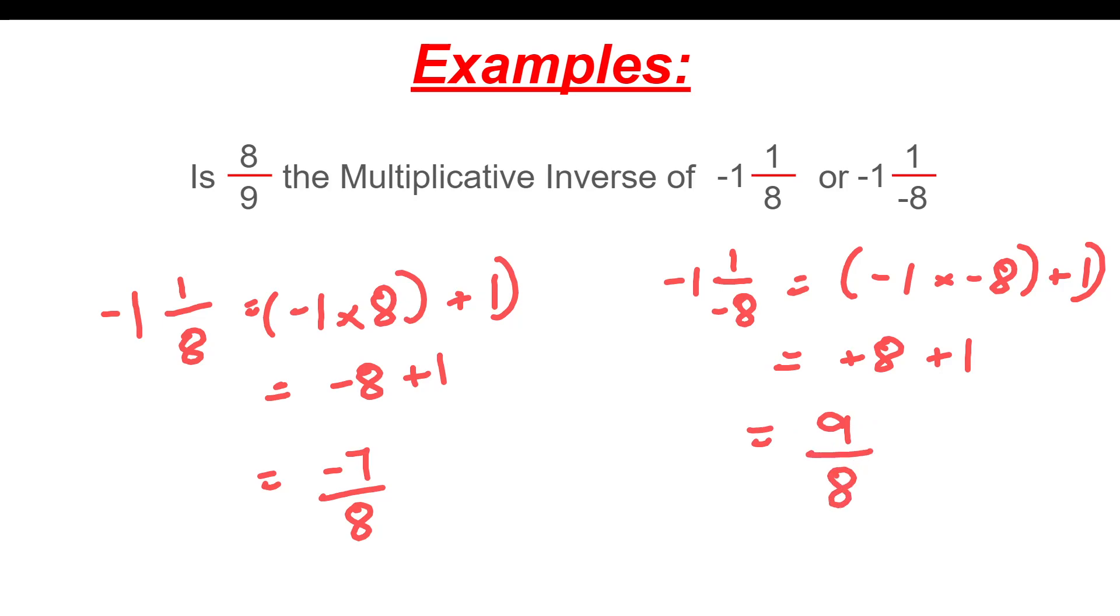The multiplicative inverse of 8 by 9 is 9 by 8. Then minus 1, 1 by 8 is the correct answer.